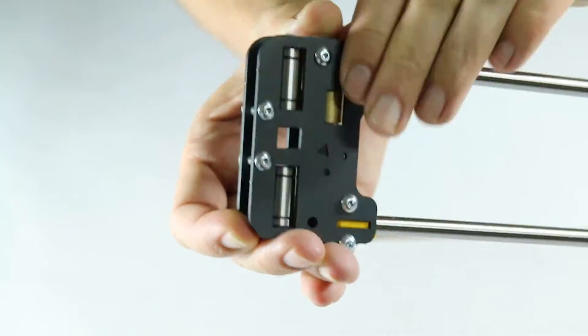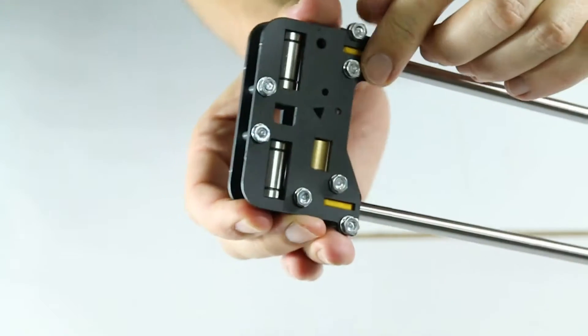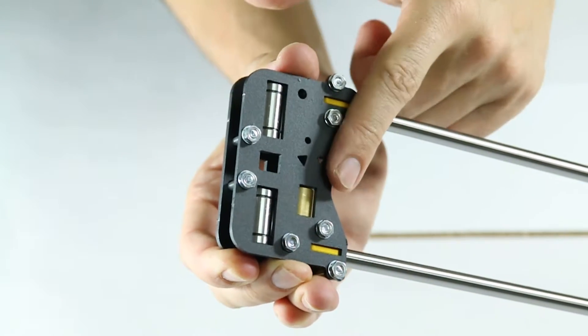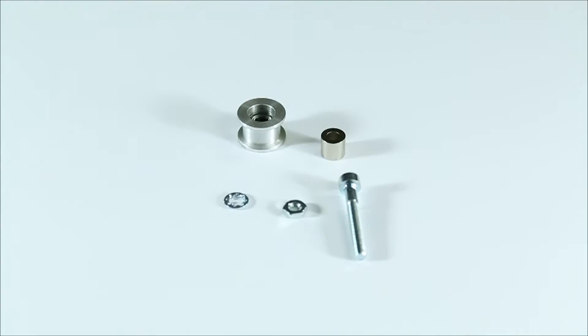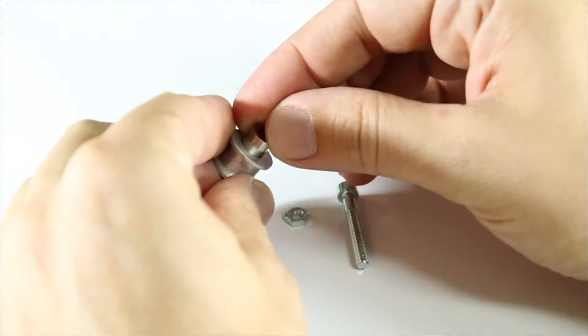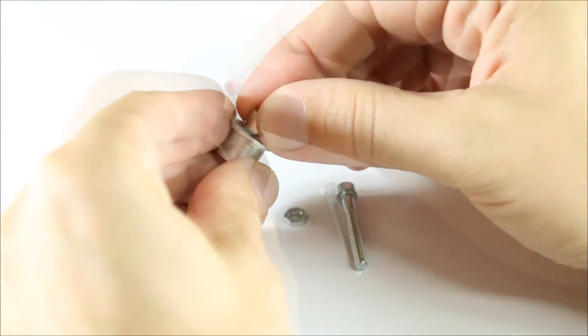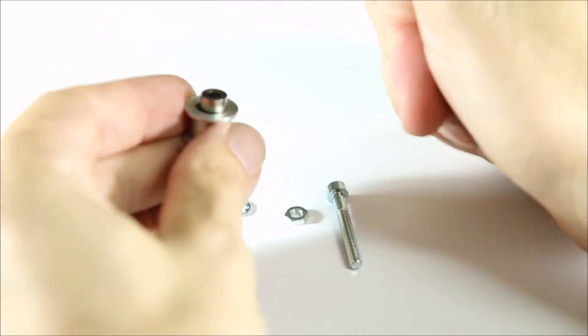Once this is done, this is how the tip of the x-axis should look so far. Note how the nuts are all on the same side. Next we assemble a pulley and a spacer. Note how the spacer only fits into one side of the pulley and that's the side to place it.